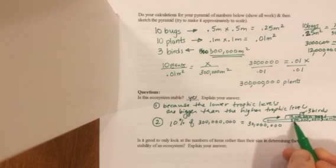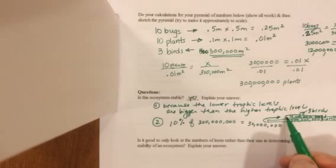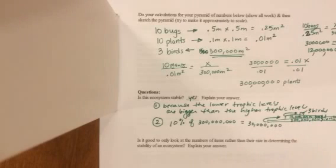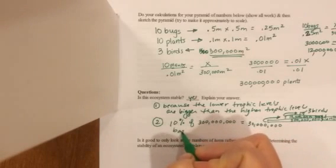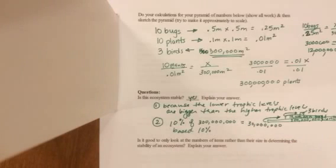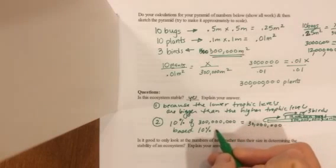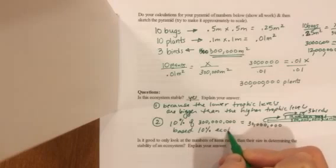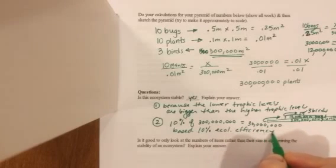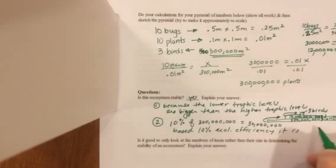Because I have more than 10%, so I'm not going to be running short. And 10% of 12 million is 1.2 million. And I have way less birds than that. So based on, again, 10% is just a basic idea. It's not real accurate. But it just gives you a basic sense. Based on 10% ecological efficiency, also, it is stable.